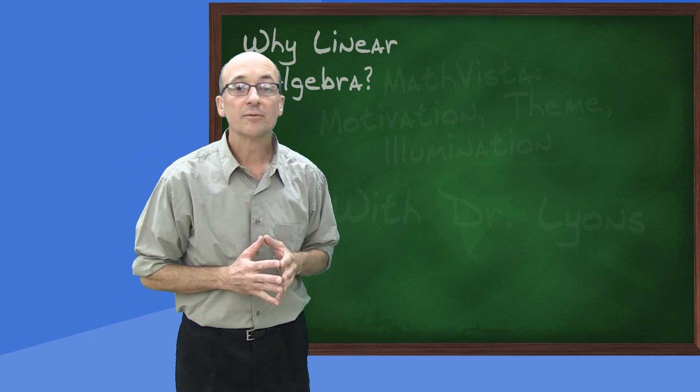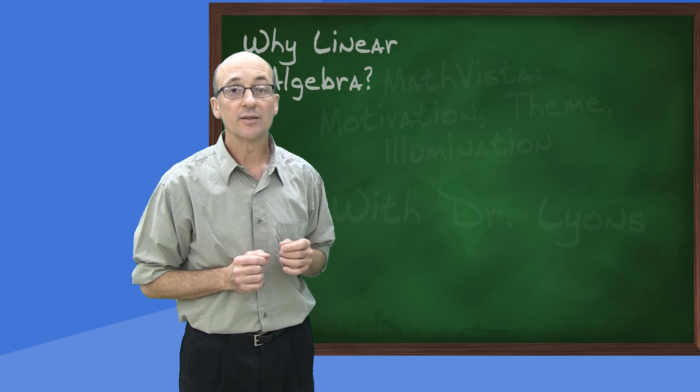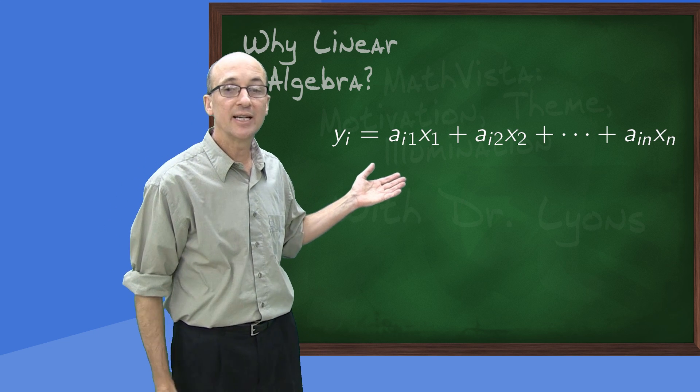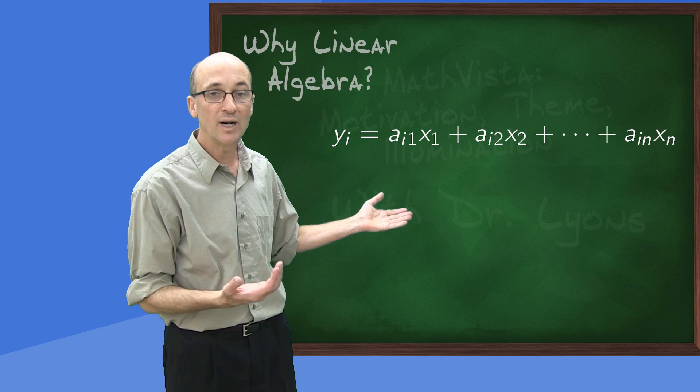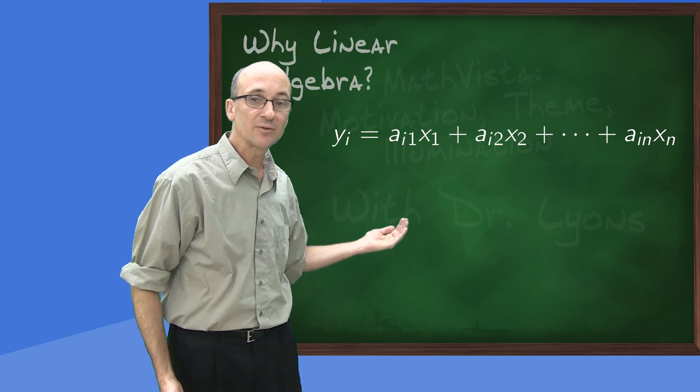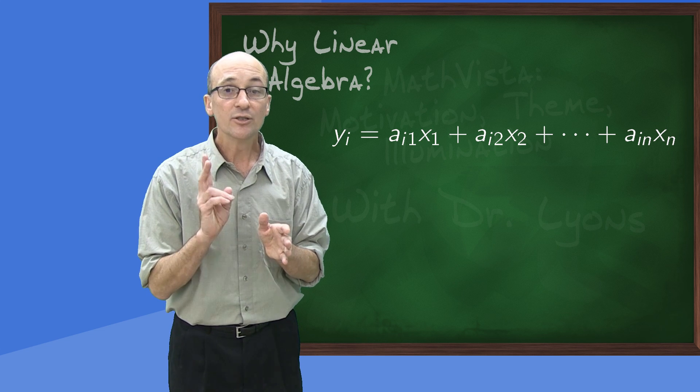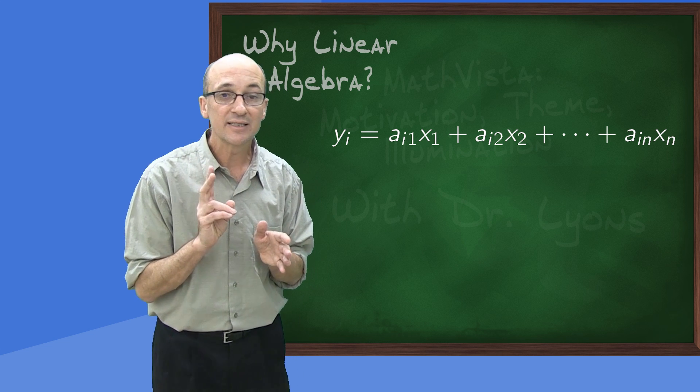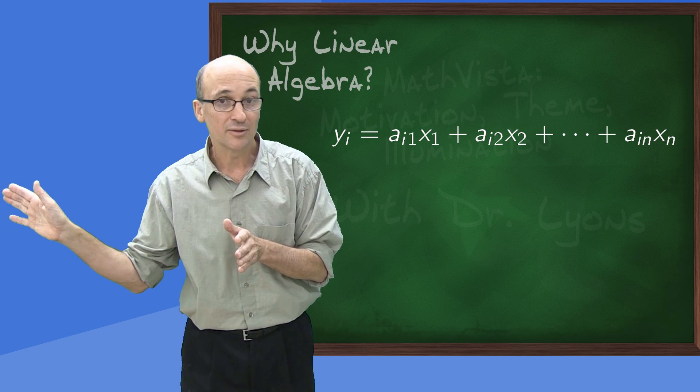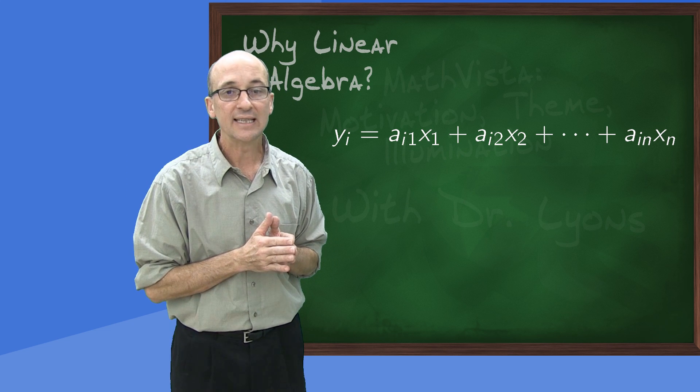Notice right away that we're going to need to do a certain amount of bookkeeping. In particular, there are many output variables, y1 through ym, so in general, the equation looks like this. We have some y number i. It has an expression in terms of x1 through xn that involves constants, but these constants now need two subscripts, two indices to keep track of both the output that is over on the left side of the equation and the inputs that go from 1 to n.